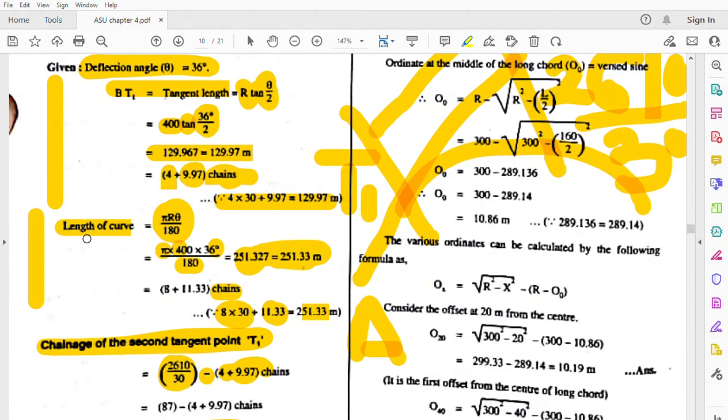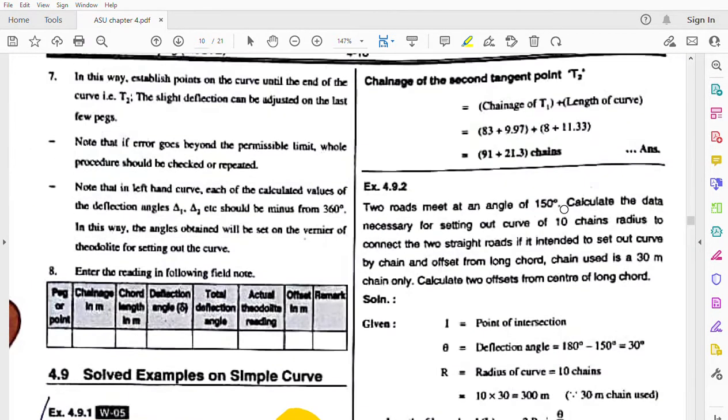The chainage of T1 we know, and the length of curve we have calculated. So T1 plus length of curve, because we're going in forward direction. When we go backward we subtract, forward we add.